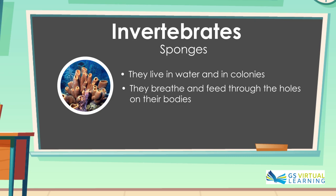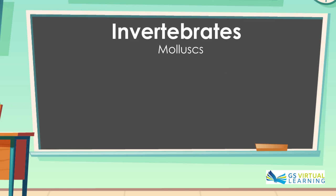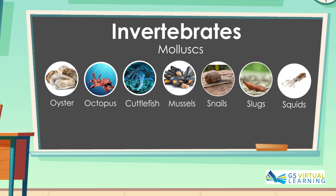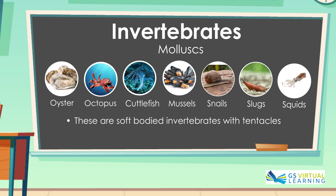The fourth group are the Mollusks. They include Oyster, Octopus, Cuttlefish, Mussels, Snails, Slugs and Squids. These are soft-bodied invertebrates with tentacles. The tentacles enable Mollusks to hear, see and feel.